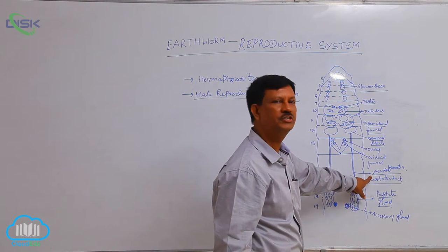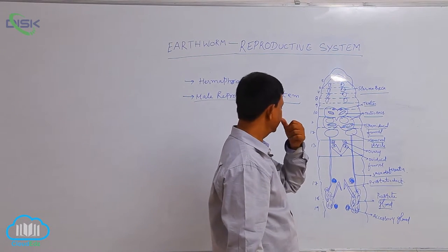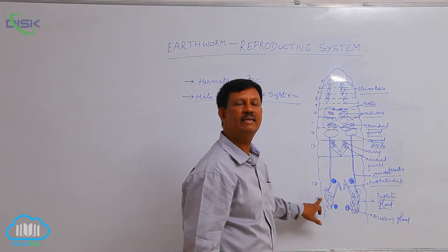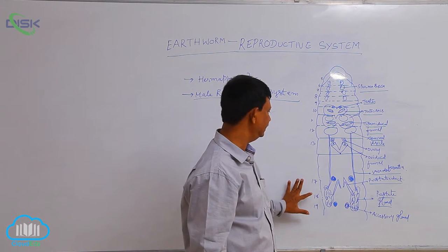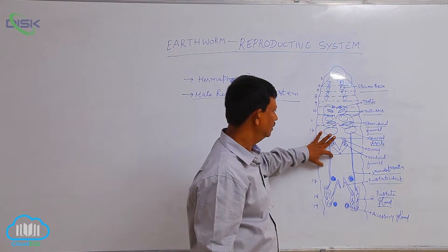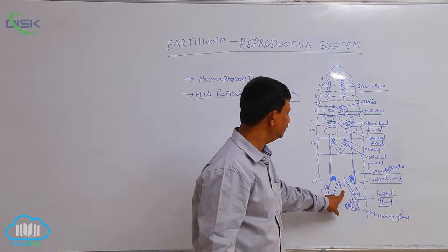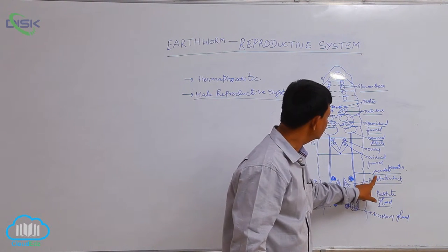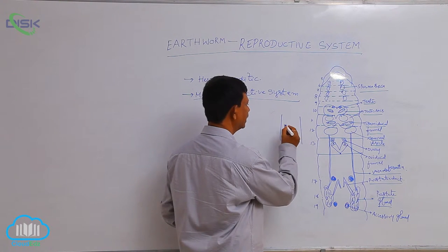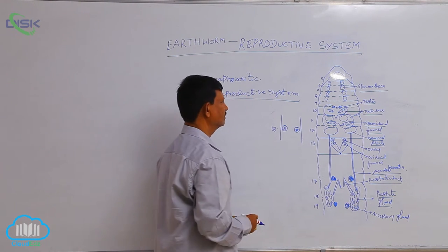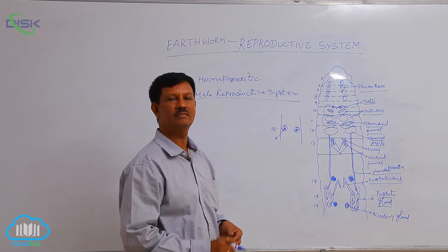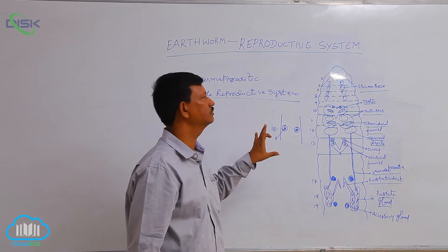The spermiducal funnels open into ducts known as Vasa Differentia. On each side, one pair of ducts arises as Vasa Differentia. Prostatic glands, one pair, are found in the 17th, 18th, and 19th segments. They secrete chemical substances useful for reproduction. Both Vasa Differentia and prostatic ducts unite and open to the outside through pores known as the male genital apertures, present on the ventral lateral side of the 18th segment.